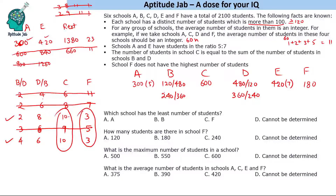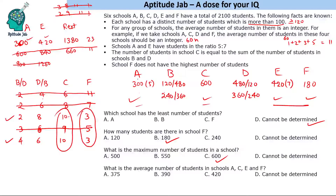Answering the questions: Which school has the least number of students? We cannot determine this, since B or D could be 120 or 180 depending on the case. How many students are in school F? Definitely 180, regardless of the case. What is the maximum number of students in a school? That is 600, in school C. What is the average number of students in schools A, C, E, and F? A+C+E+F = 300+600+420+180 = 1500, divided by 4 = 375.